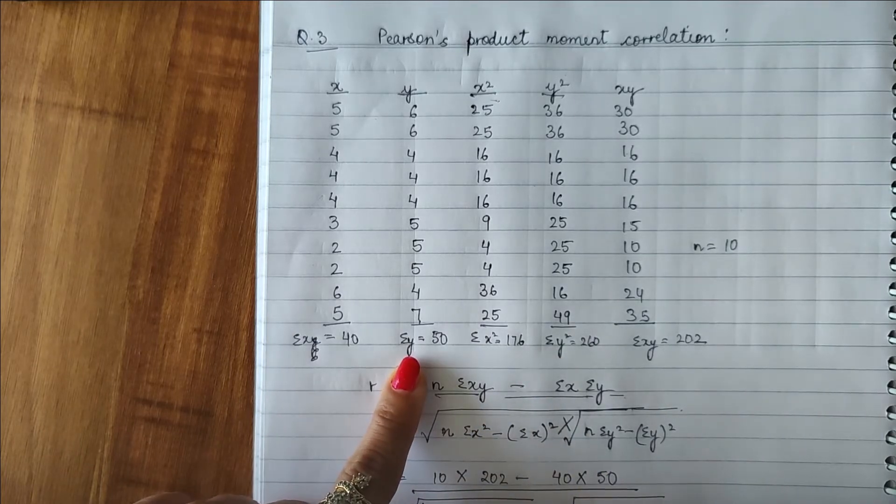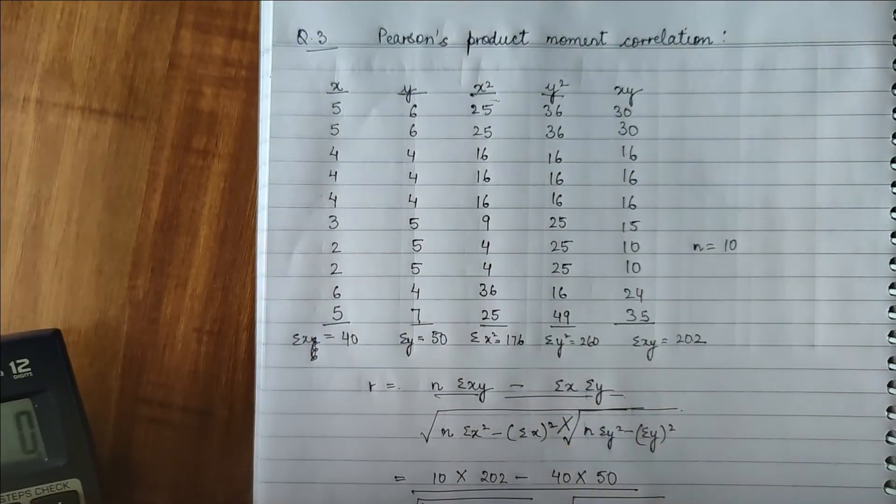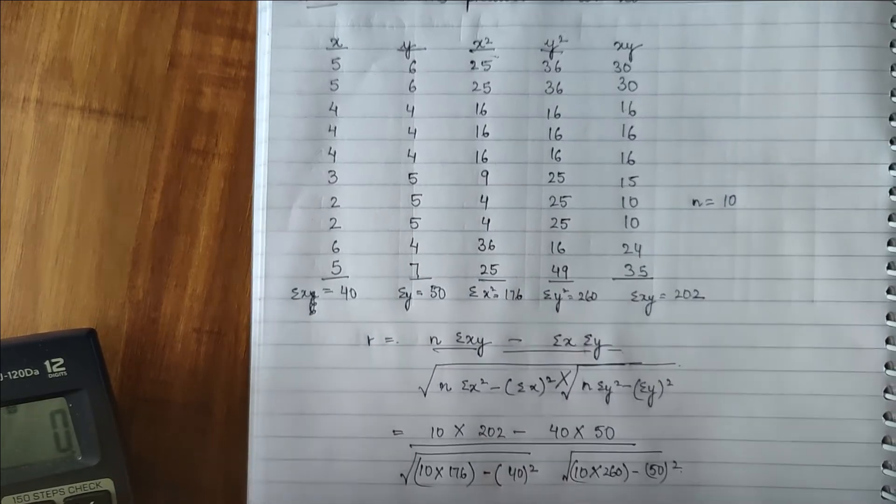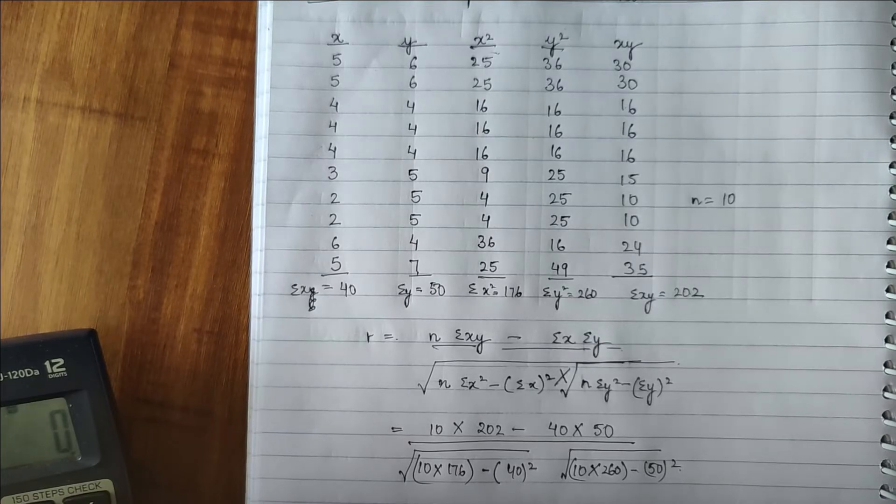So this is 10. So this will be 2020 minus 2000 upon 1760 minus 1600.